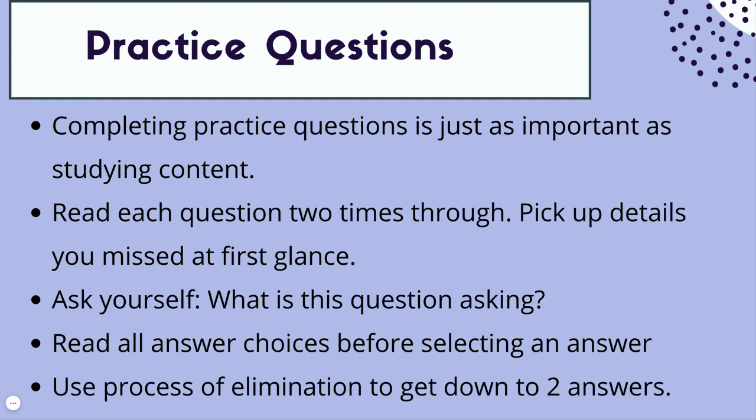Before picking an answer choice, read all your answer choices. Sometimes we want to immediately jump to what we think is the answer, but on this test every word matters. You want to make sure you're reading every answer choice carefully - one word might change the answer choice, so you wouldn't want to jump to one answer when there's a better choice you overlooked. Best advice: use process of elimination. Rule out ones you know are not correct. If you can get it down to two answers it's going to be much easier to manage the answering process, and your chances of getting the question correct are going to improve.